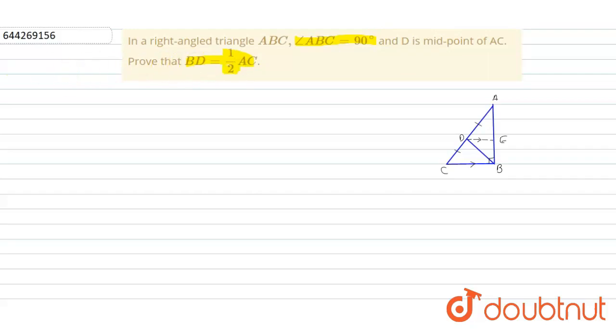Let us start solving this question. Yes, this figure is for this question. This is our triangle ABC. This is a right angle triangle. Right angle is on angle B.